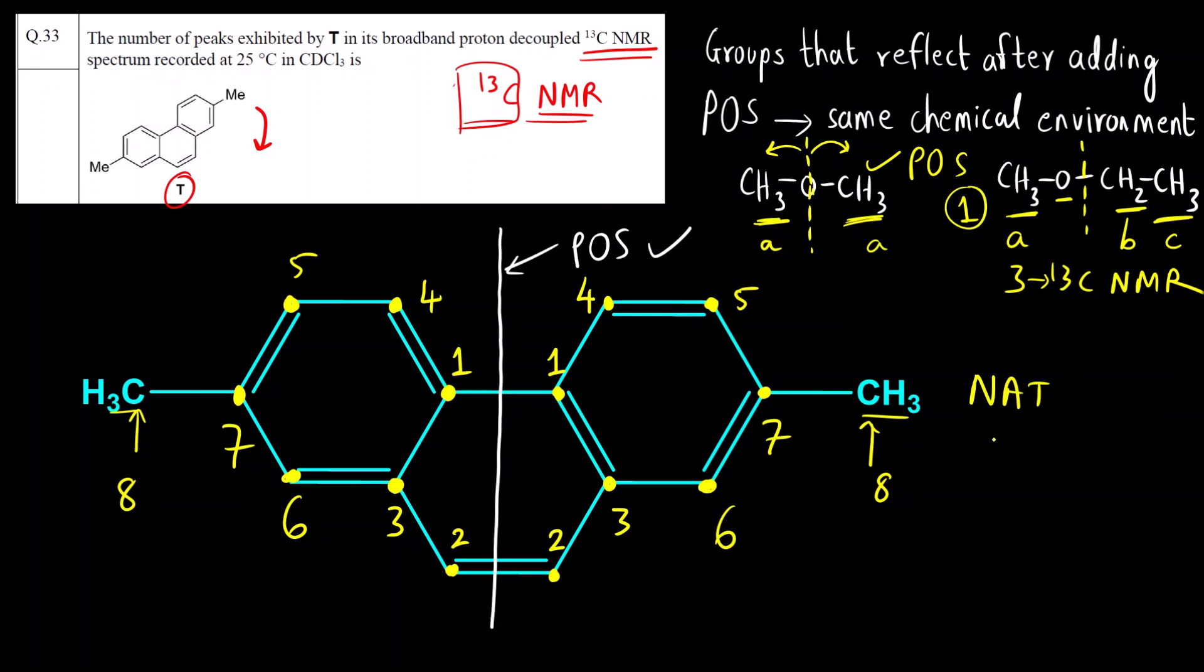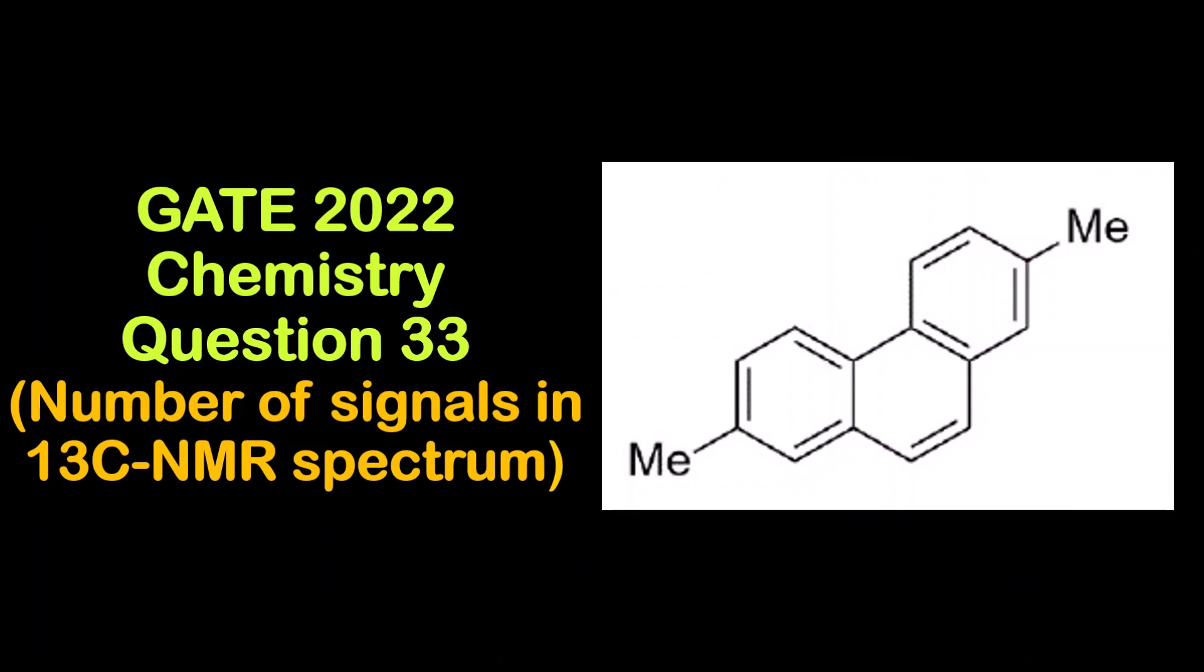This is a NAT type of question, numerical answer type. So you have to insert one number or a digit. If you see the key, it is given 8 to 8. What you have to enter in the box is 8. There will be a numeric pad given to you: 1, 2, 3. All the numbers are there. A decimal is also given to us and one backspace button is also there. What you have to enter is 8. You have to just type 8. What is the correct answer for this? There are total how many signals? 8 signals. Correct answer for this question is 8.